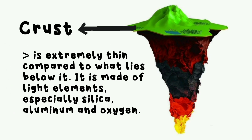The crust is extremely thin compared to what lies below it. It is made of light elements, especially silica, aluminum, and oxygen.